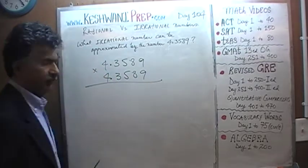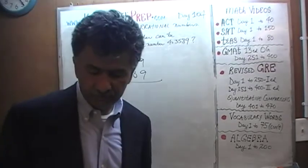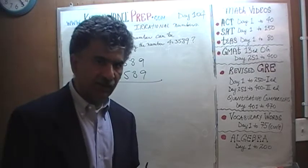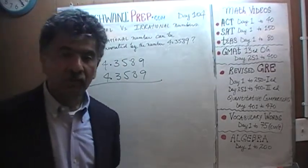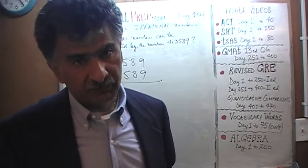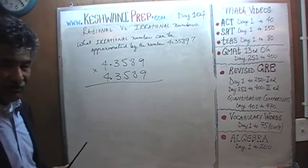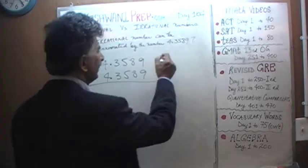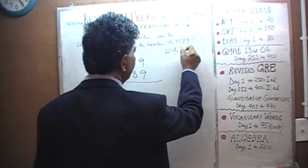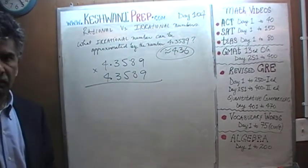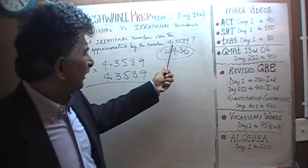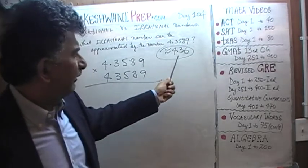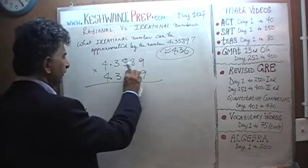We have to multiply the two quantities. Before we dive in, we can immediately realize it's going to be quite tedious and laborious as written. So let's make our life easier and simpler. We are going to approximate 4.3589 as 4.36 — nobody in their sane mind would disagree that 4.3589 is approximately 4.36. So we will work with 4.36.